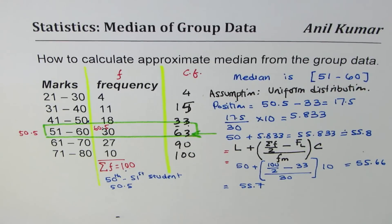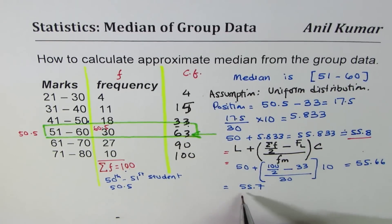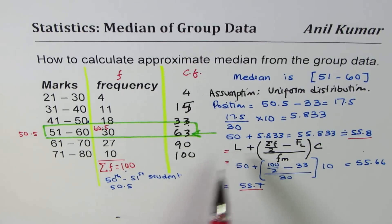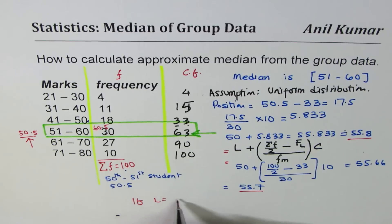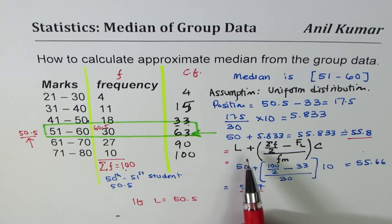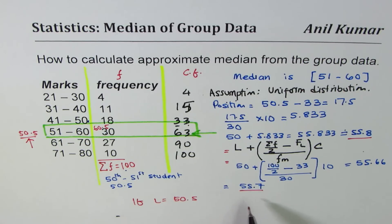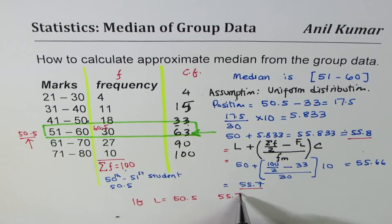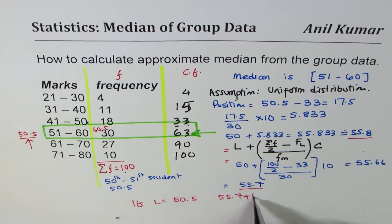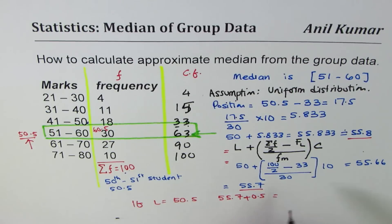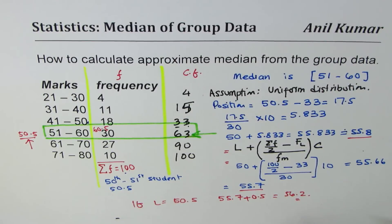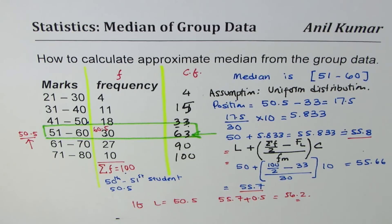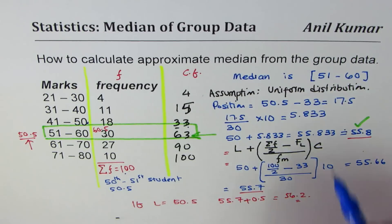So 55.7 is one possible answer when we use L equals 50. However, if you use L equals 50.5 — which is the case in some schools — then the answer will be 0.5 higher. All other values remain the same, so that gives you approximately 56.2 as your answer. That approach is used in different schools.